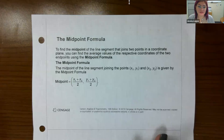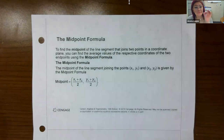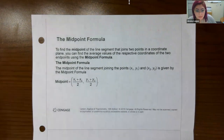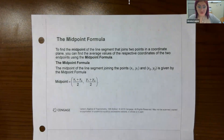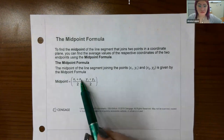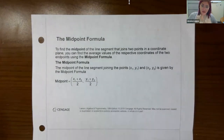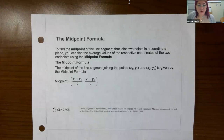Now that we know how to find the distance between two points, another helpful piece of information is being able to find the midpoint between two points. You have two points, and you want to plot a point in the middle of the line connecting them. The midpoint can be found using the midpoint formula: find the average of the two x values and the average of the two y values — add the x values together and divide by two, and similarly add the y values and divide by two.